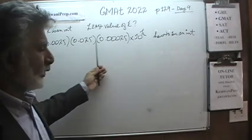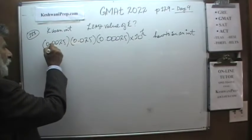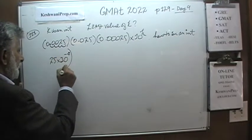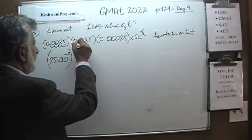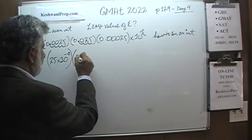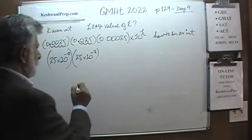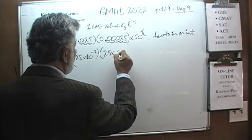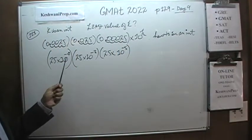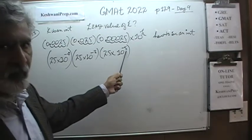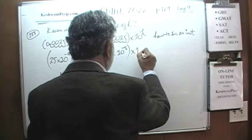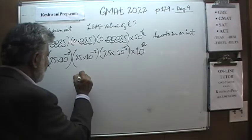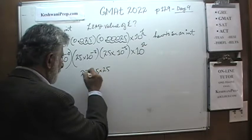We want to make this into an integer. Writing in scientific notation: 0.0025 is 25 times 10 to the negative 4; 0.025 is 25 times 10 to the negative 3; and the last 0.025 is 25 times 10 to the negative 5. Combining the powers of 10: negative 4 plus negative 3 is negative 7, and negative 7 plus negative 5 is negative 12. So we have 25 times 25 times 25 times 10 to the negative 12 times 10 to the K.